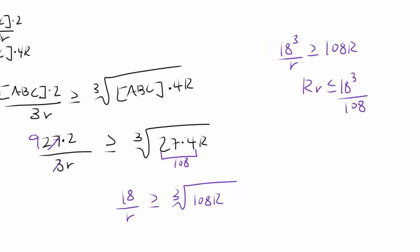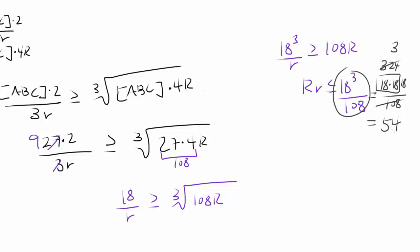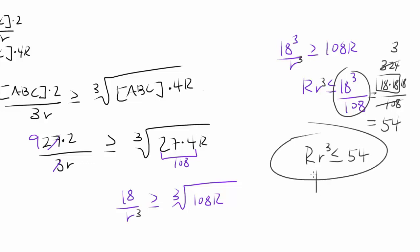Computing 18³/108: 18 × 18 = 324, and 324/108 = 3, so 18³/108 = 3 × 18 = 54. Therefore R·r³ ≤ 54, meaning the maximum value capital R times lowercase r cubed can obtain is 54.